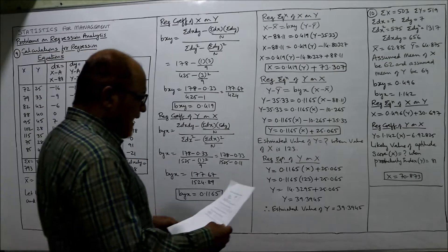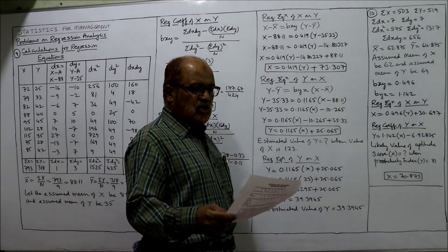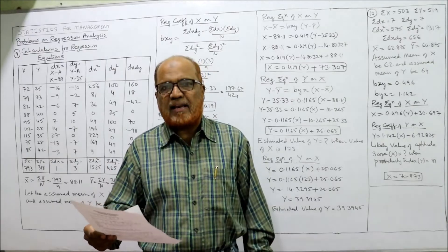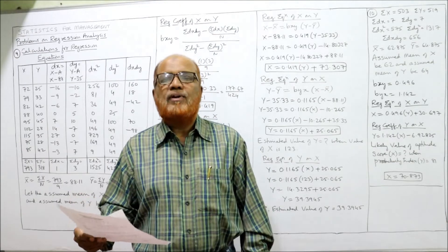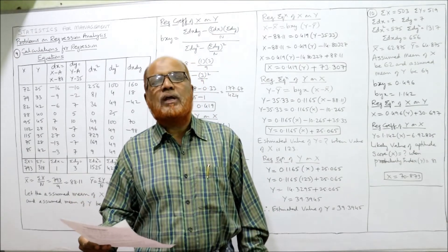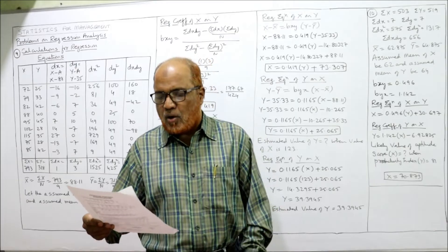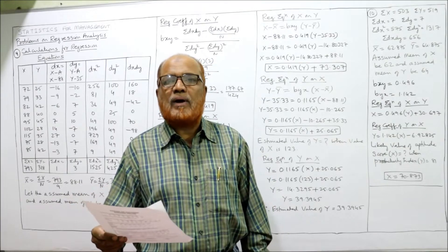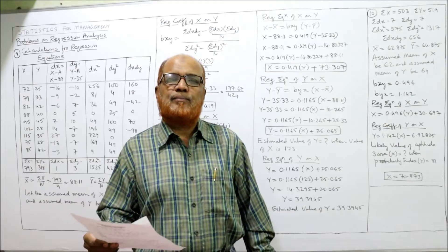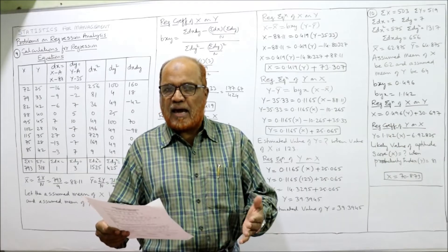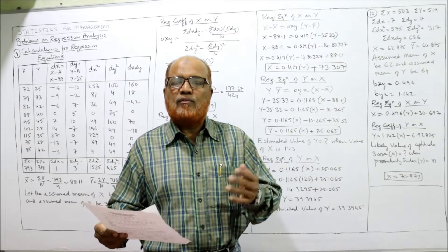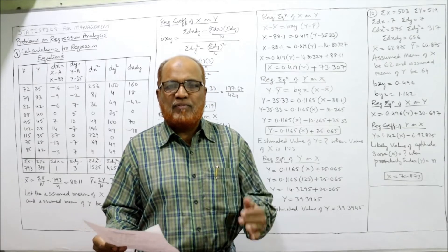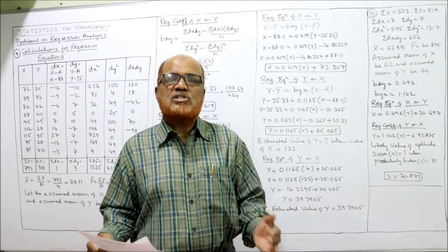See the ninth one: find the two regression equations for the following data. Two series are given — x values and y values. We have to find out the two regression equations. Also, estimate the value of y when the value of x is 123. X is given and we have to find out the value of y, so we need the regression equation y on x.